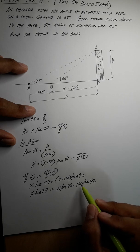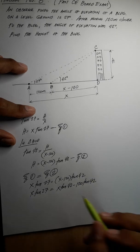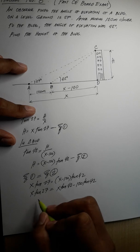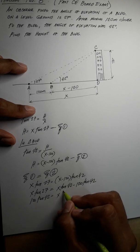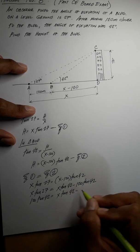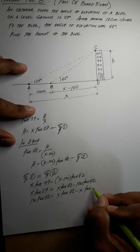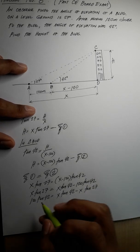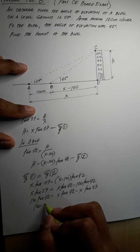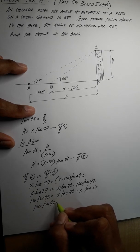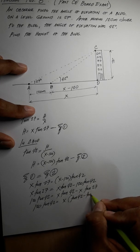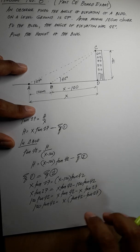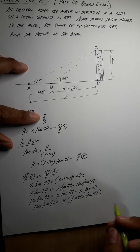After transposing, we get 120 tangent 42 equals x tangent 42 minus x tangent 27. Factoring out x on the right side gives: 120 tangent 42 equals x times (tangent 42 minus tangent 27).